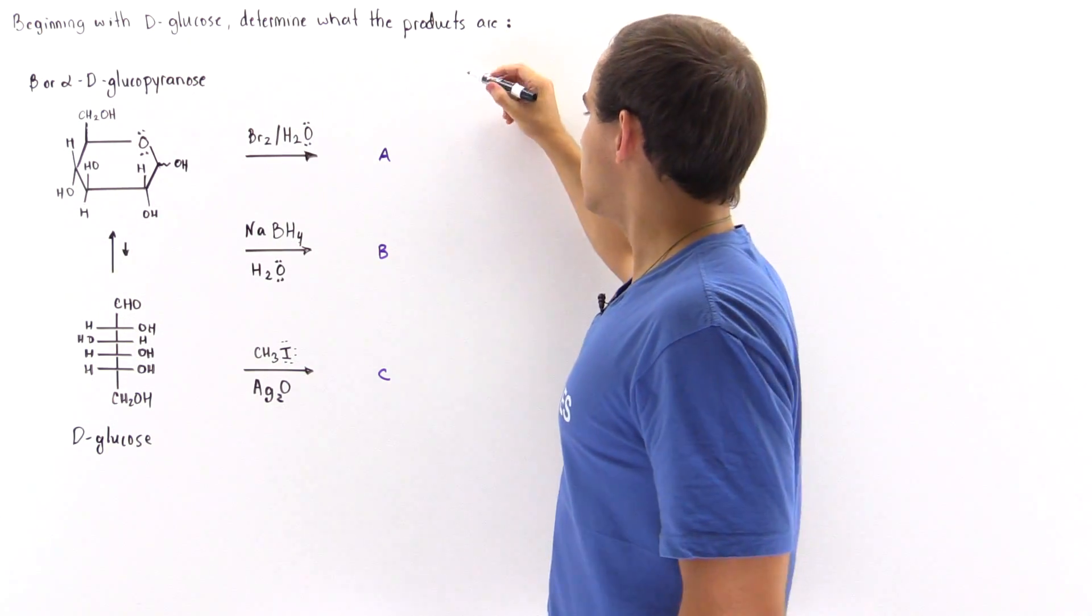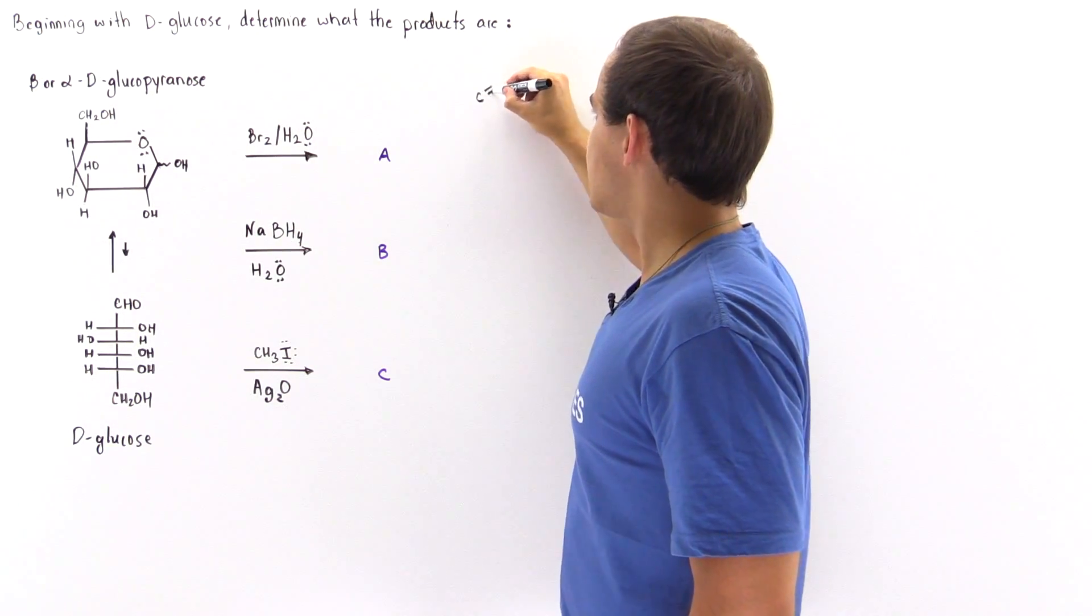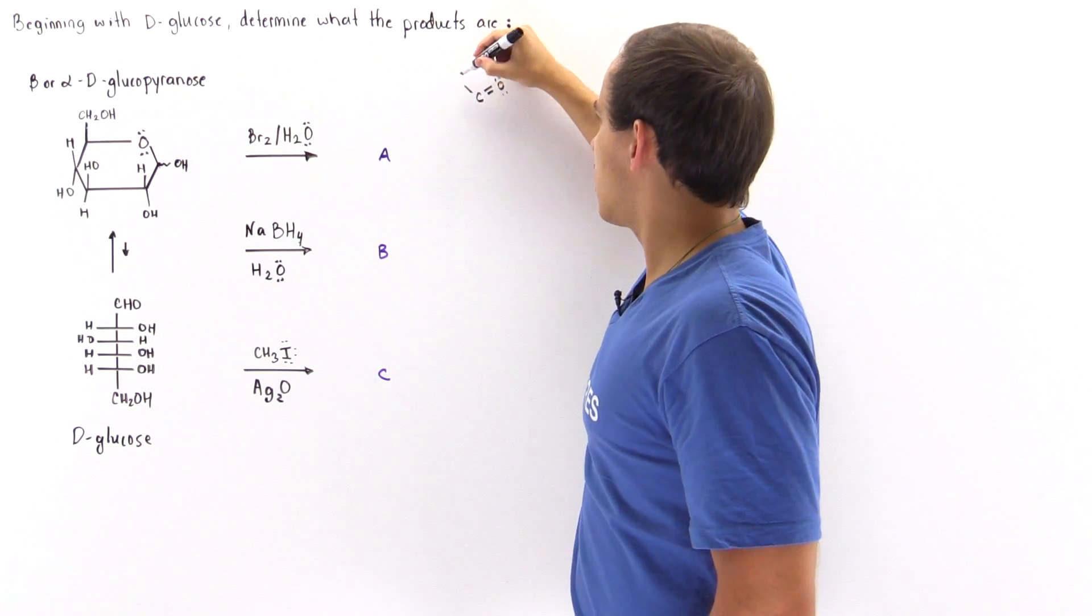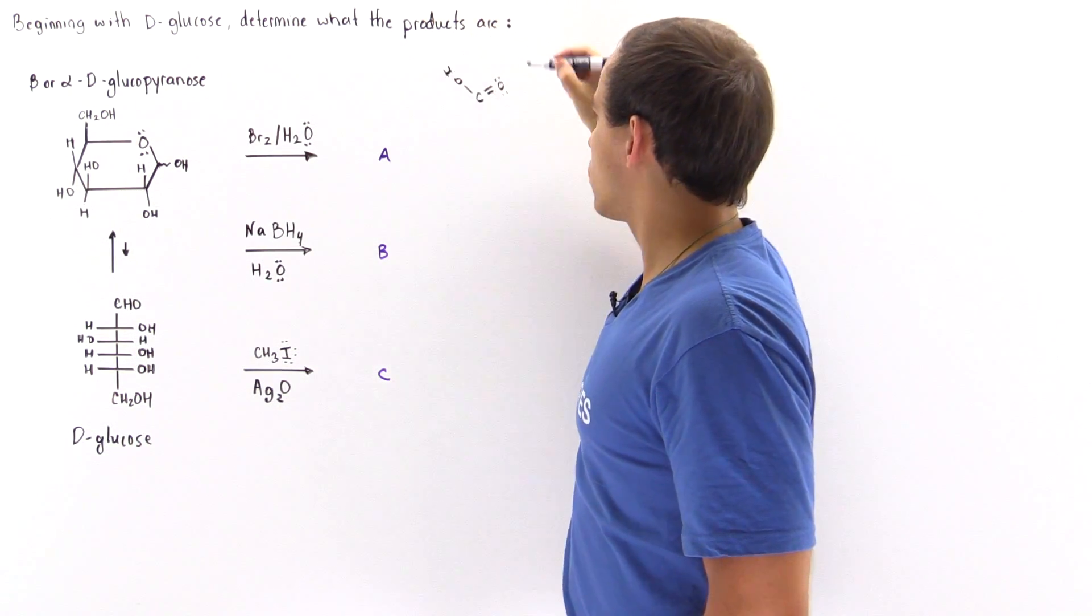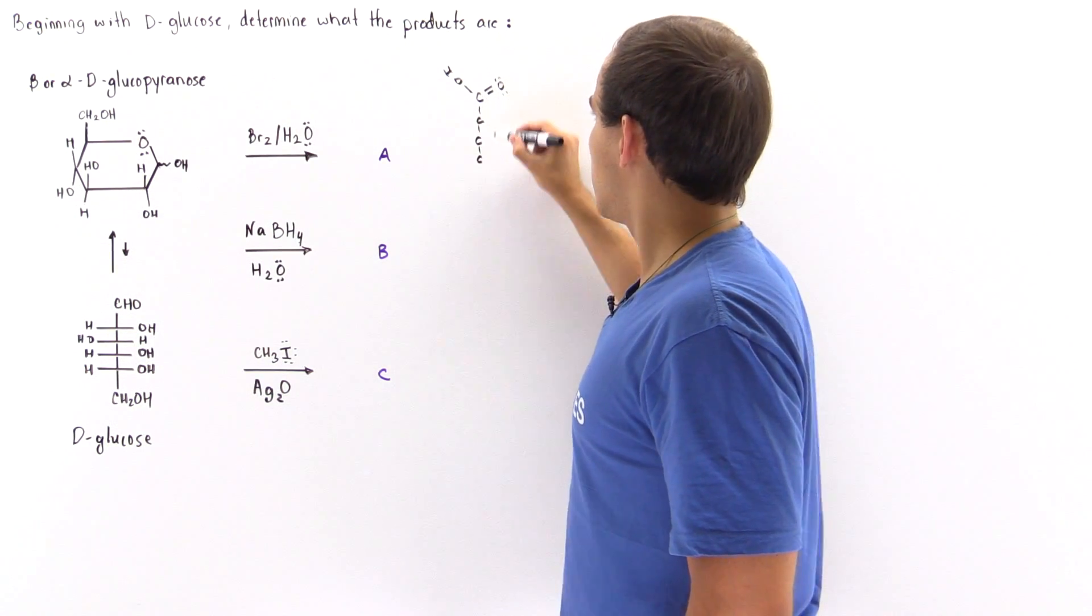Basically product A looks something like this: we have our carbon attached on one side to our carbonyl group, attached to the other side we have our OH. So we have the second carbon, the third carbon, the fourth carbon, the fifth carbon, and the sixth carbon.